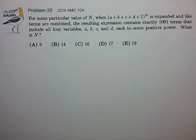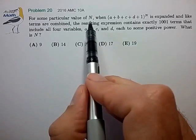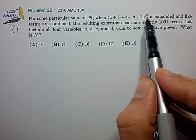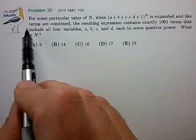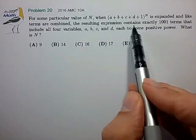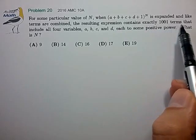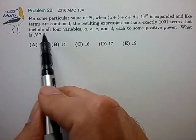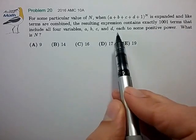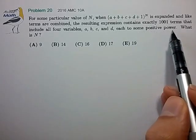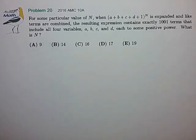Hi, this is problem 20 from the AMC 10A. For some particular value of n, when this polynomial to the nth power is expanded and like terms are combined, the resulting expression contains exactly 1,001 terms that include all four variables a through d, each to some positive power. What is the value of n?